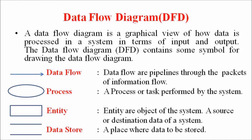A data flow is a pipeline through which a packet of information flows, and data flows are represented in DFD with an arrowhead. The second element is the process, which is represented in a rectangular or elliptical shape, and this shape represents the process or task performed by the system. The third is the entity, represented in rectangular boxes — entities are objects that are a source or destination of data. The fourth is the data store, a place where data is stored, represented by two parallel lines.